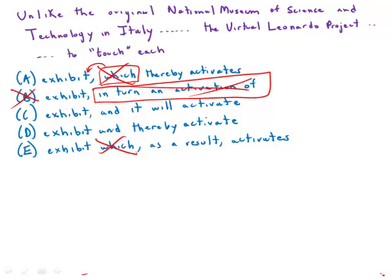Answer choice C is also interesting because we get 'and it will activate.' The question is, what is the 'it'? Again, it's the act of touching itself that activates. But the antecedent of a pronoun can't be a verb — it has to be a noun. And so that is also incorrect.